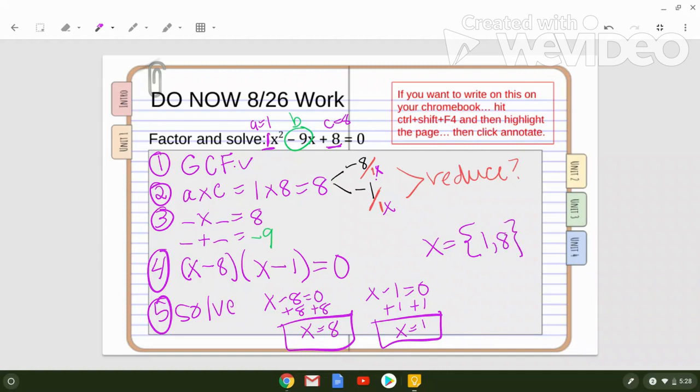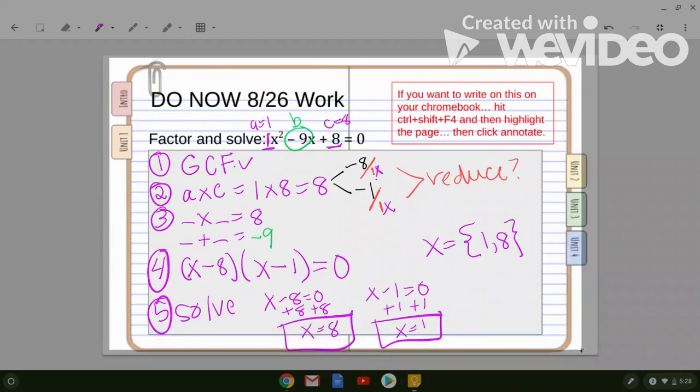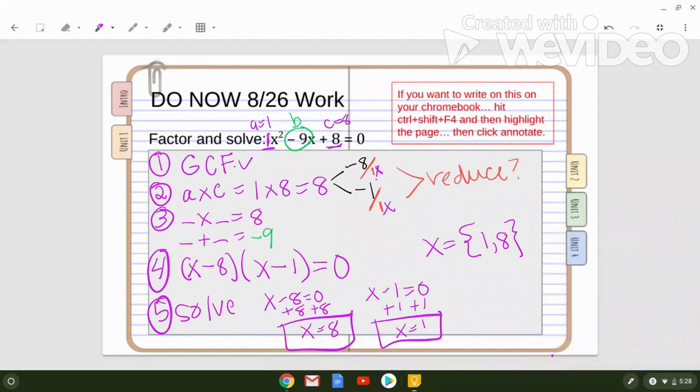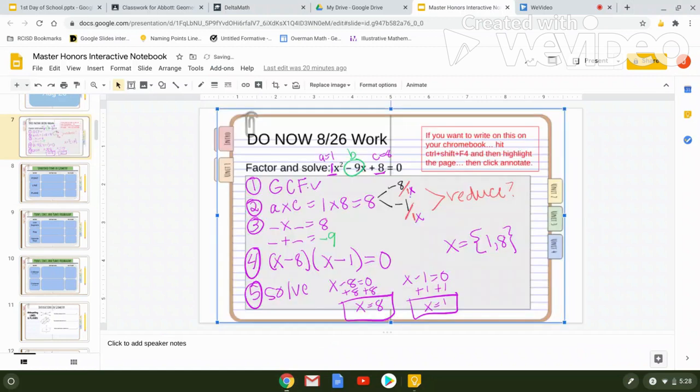So I put this back in my notebook. Control shift F4. x equals 1. Highlight the page you're trying to get or the amount. Copy to clipboard. Let's go back to our slide and press control V to paste it in.